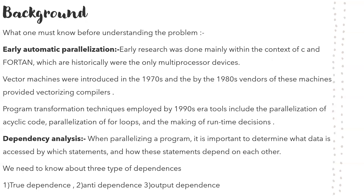Let's look into dependency analysis. In compiler theory, dependency analysis means exhibiting order constraints between statements and instructions. When parallelizing a program, it is important to know what data is accessed by which statements. There are three types of dependencies: true dependency, anti-dependency, and auto-dependency.